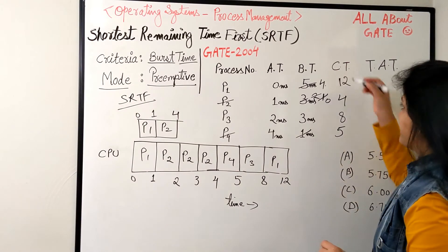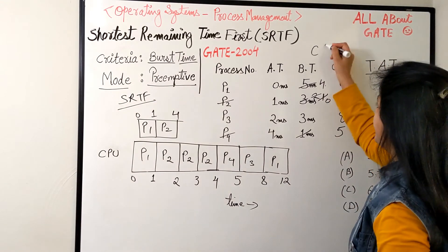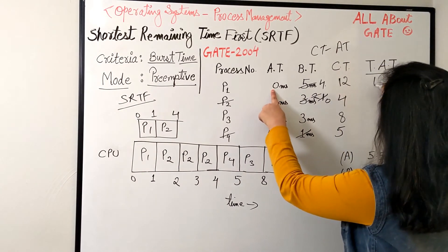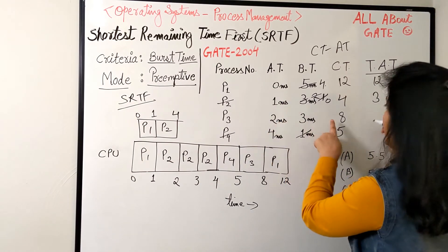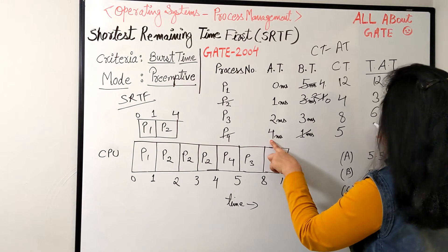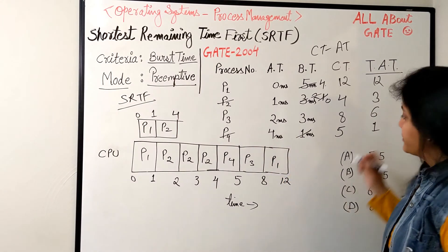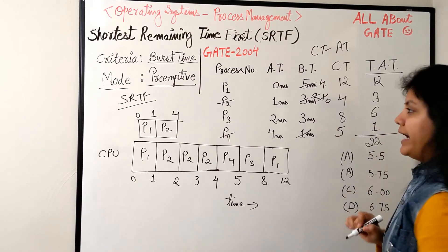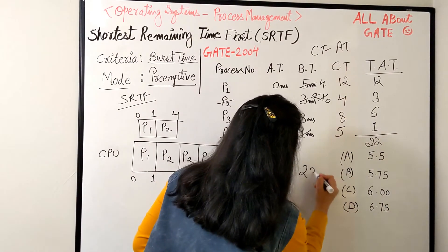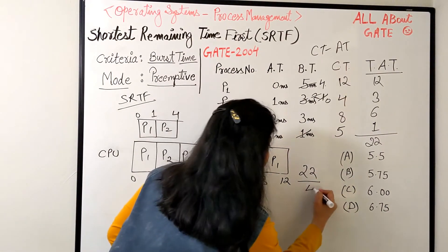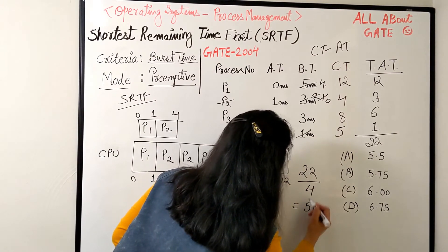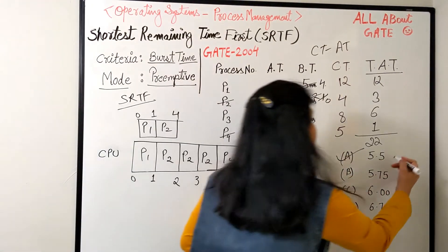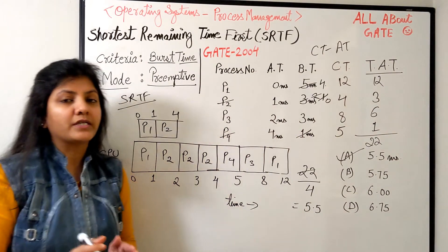Once we have the completion time, turnaround time is simply completion time minus arrival time. So that's: P1 = 12 minus 0 = 12, P2 = 4 minus 1 = 3, P3 = 8 minus 2 = 6, P4 = 5 minus 4 = 1. Now to find the average turnaround time, we add them: 12 plus 3 plus 6 plus 1 equals 22. Average turnaround time is 22 divided by the number of processes, which is 4. So 22 divided by 4 is 5.5 milliseconds. The answer is option A: 5.5 milliseconds.